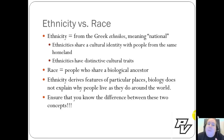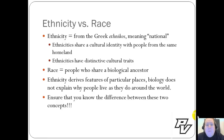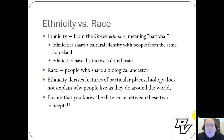The term ethnicity comes from the Greek 'ethnicos,' which means national. Ethnicities are cultural in concept — they are made by the surrounding society, typically people from the same homeland who have distinctive cultural traits. Race is a biological issue — people who share a common biological ancestor. Please be careful not to confuse those two: ethnicity is cultural, race is biological.